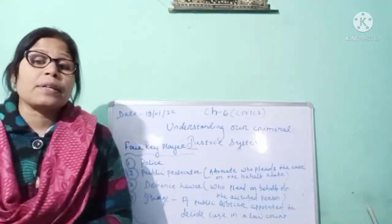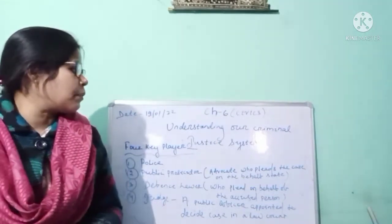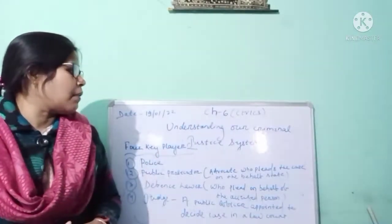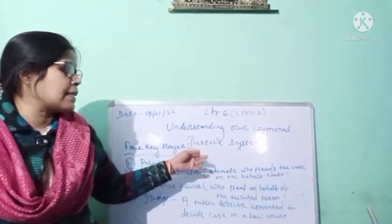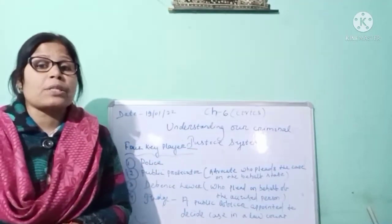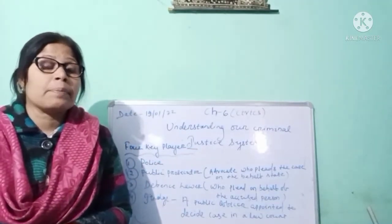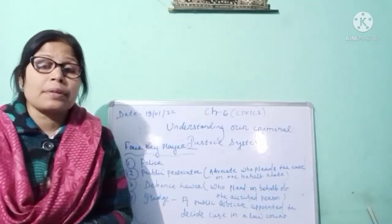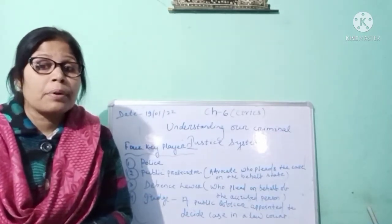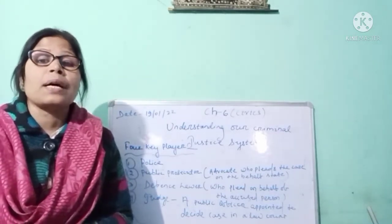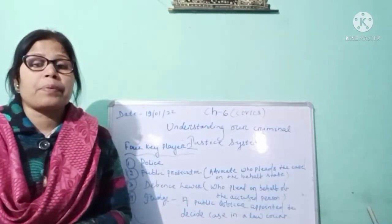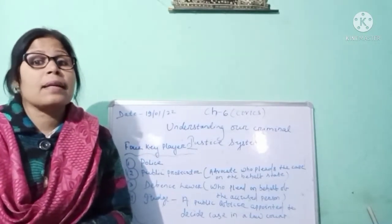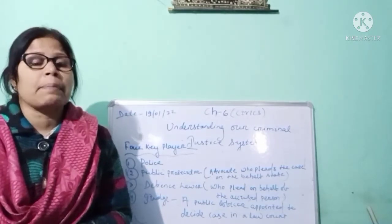So what is the criminal justice system? First of all, what is crime? Crime means any person who does any unlawful activity — that is known as crime. The person who does that unlawful activity is known as a criminal.